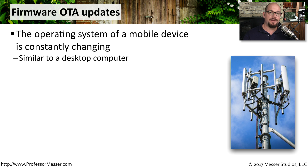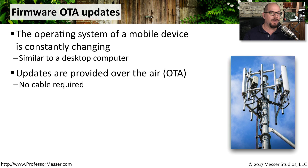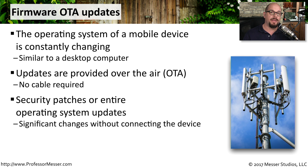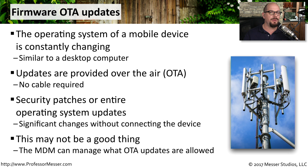Like desktop computers and laptops, the operating system of mobile devices is constantly being updated. We can receive firmware and OS updates over the air, or OTA, without connecting to any particular computer. These patches could be significant — they could change the entire operating system or provide a series of security patches over time. However, a patch could change how a particular application operates and prevent you from doing required work. That's why many security teams manage updates through the mobile device manager, pushing them out only after they've been approved.